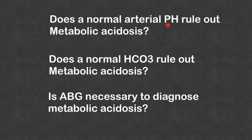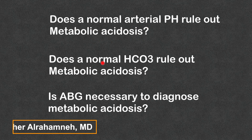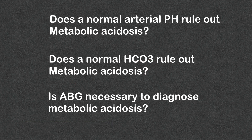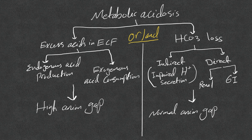Does a normal arterial pH rule out metabolic acidosis? How about a normal bicarb level — does it rule out metabolic acidosis? Is an ABG necessary to diagnose metabolic acidosis? To answer this, we need to understand metabolic acidosis.